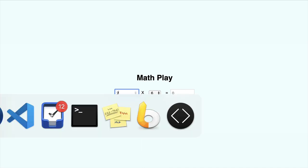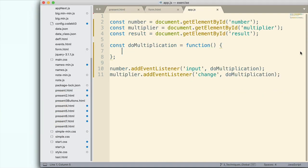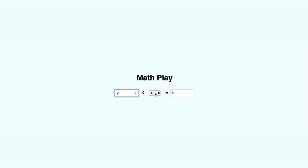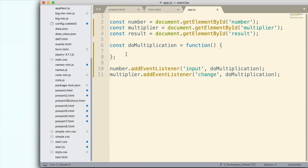So let's take a look at the code right here. Basically what I've done is I've grabbed the elements that I need to. This is the number, this is the multiplier, and this is the result. So I've grabbed those three elements and then I've added event listeners to the number and to the multiplier so that when either of those change we have an input event on the number field or a change on the select, and it's going to call this function.